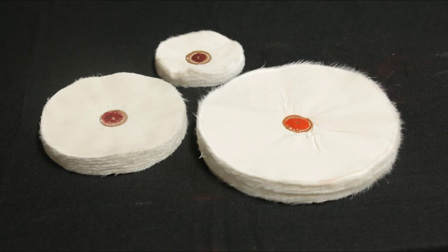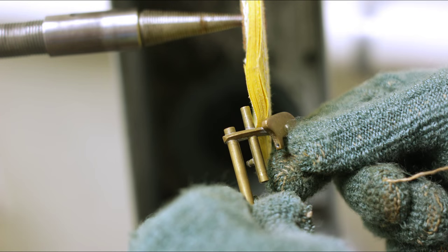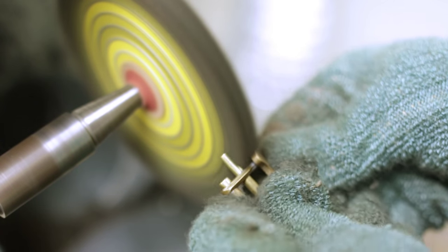The loose stitched muslin buff is ideal for buffing around posts, tone holes, and for use with small parts. The knife edged buff is either used for cut or color buffing in order to get into tight spaces where other buffs cannot reach.